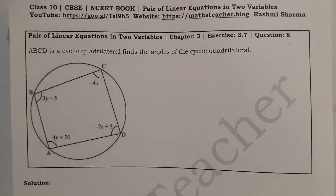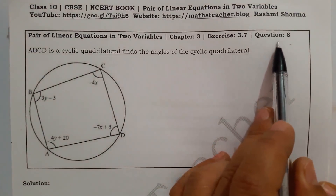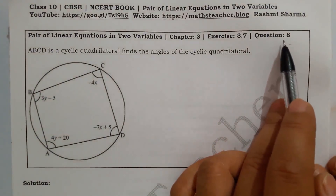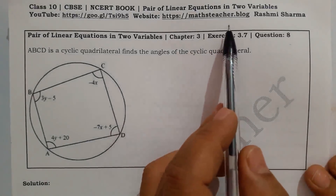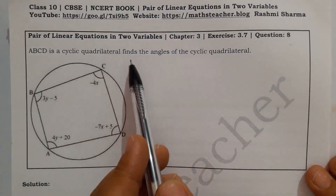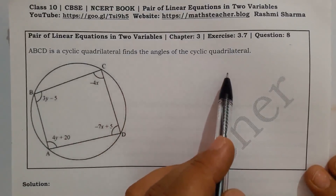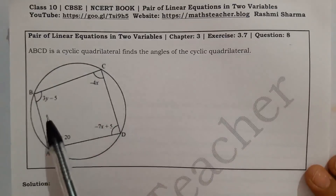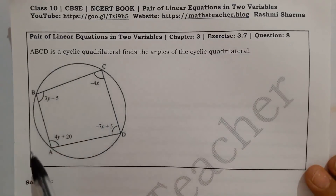Hello viewers, welcome to my channel. I am Rashmi, your maths teacher. Now we will solve chapter 3, exercise 3.7, question 8. The last question is optional exercise and its solution is on my blog. The question is: ABCD is a cyclic quadrilateral — find the angles of the cyclic quadrilateral.